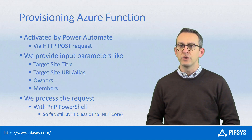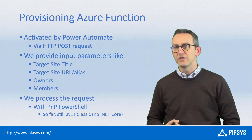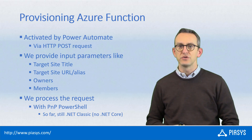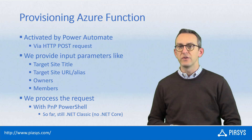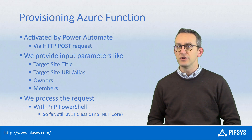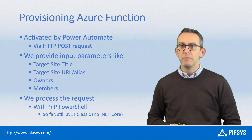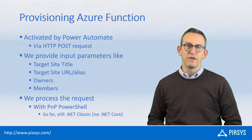That Azure function will be an HTTP activated Azure function in which we will receive as input arguments through a JSON message the title, the URL or the alias of the site collection to create, the owners and the members of the site collection that will be created, and all the input parameters needed to do the actual provisioning. Inside the Azure function we will use PMP PowerShell in order to do the real provisioning of the content in the target SharePoint Online environment.